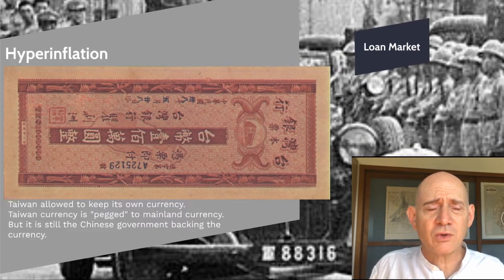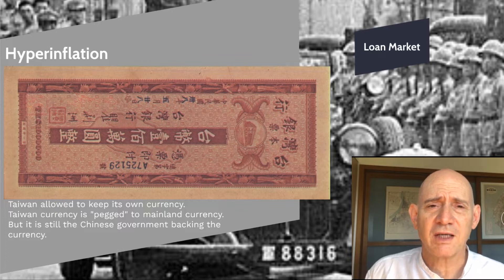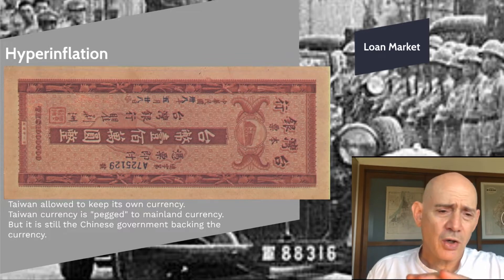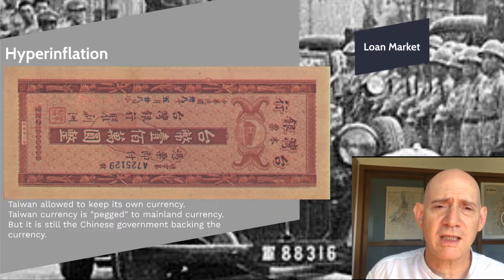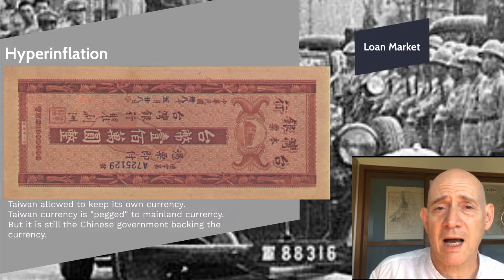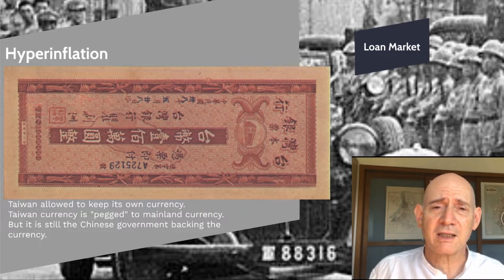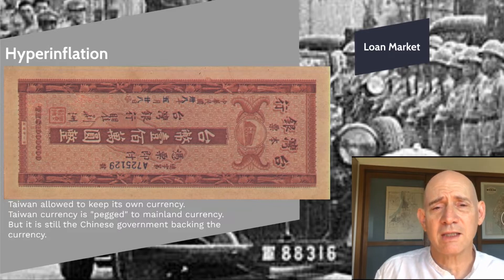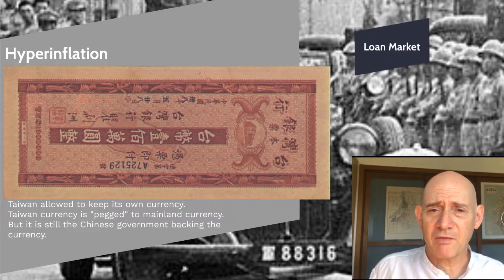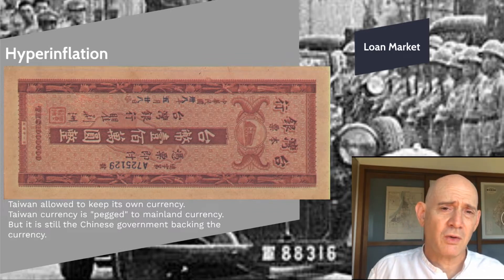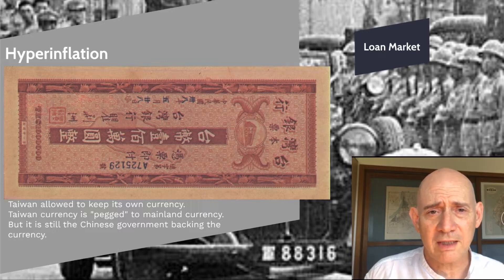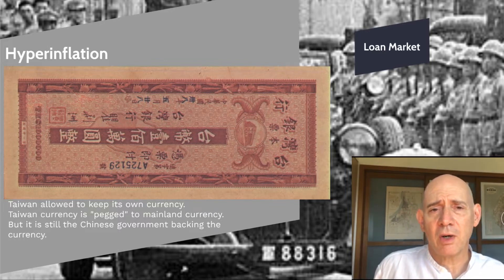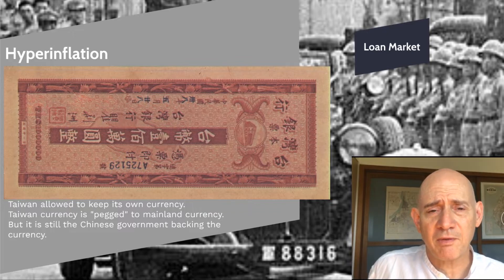One of the problems Taiwan now faced was hyperinflation. The value of the Taiwan dollar begins to plummet. When the Republic of China unites Taiwan to China, they don't unite the currencies because the ROC currency had been undergoing hyperinflation for a long time. They decided to protect the Taiwan economy by letting Taiwan keep its own currency. The problem is the same government is backing both currencies, nobody trusts this government, and the government is overprinting both. The Taiwan hyperinflation, though, is slower than the Chinese hyperinflation on the mainland.